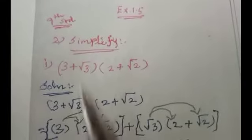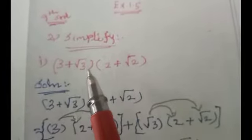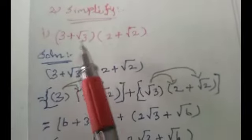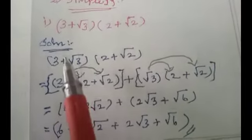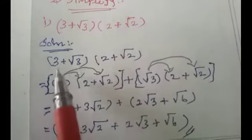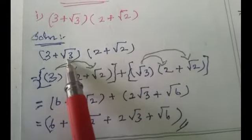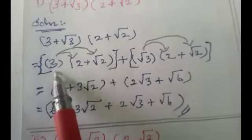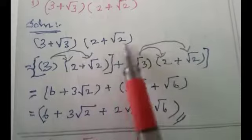Section 1.5, first subdivision: we have to simplify the given rational expression. The given factors are (3 + √3)(2 + √2). We write the question and go for continuous multiplication. First, we multiply 3 by this factor and then √3 by this factor, giving us: 3(2 + √2) + √3(2 + √2).